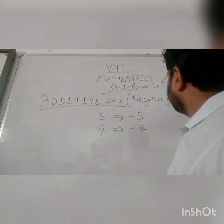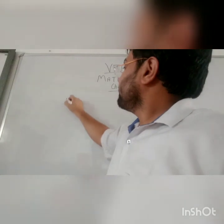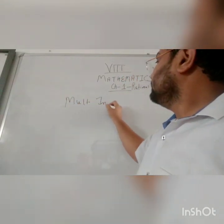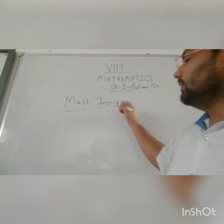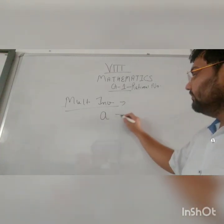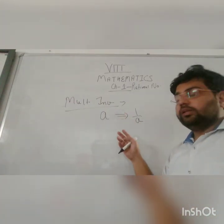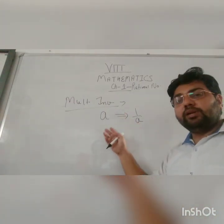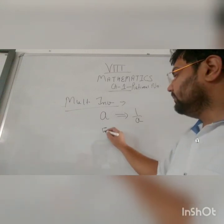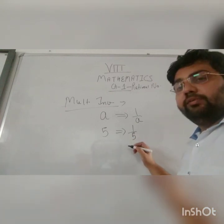Similarly, there is another concept: multiplicative inverse. This is also known as the reciprocal of a number. So if you are given a number a, its multiplicative inverse will be 1 by a. The number with which we multiply the given number so that the result is 1. So multiplicative inverse of 5 will be 1 by 5, as 5 into 1 by 5 is 1.